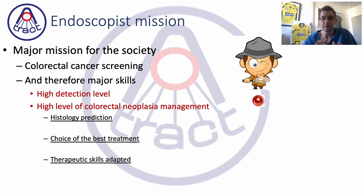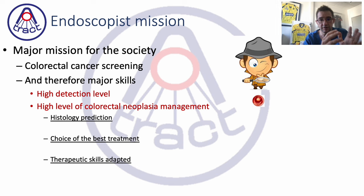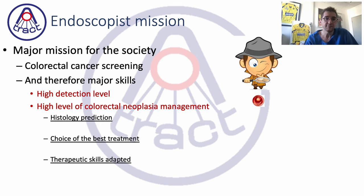The endoscopist's most important mission for society — at least in the West where colorectal neoplasia are most frequent — is to have major skills in detection and a high detection level. As soon as a lesion is detected it will be removed by any means, and therefore it is very important to avoid missed adenocarcinoma or missed neoplasia.